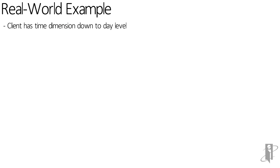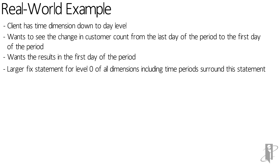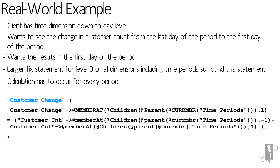Let's look at a real-world example. I have a client that has a time dimension down to a day level. They wanted to see the change in customer count from the last day of the period to the first day of the period, with the results placed in the first day of that period. This whole thing has a larger FIX statement around it fixing on level zero of all dimensions, including the time dimension, and the calculation had to occur for every single period. I created a member called Customer Change and I'm storing the data there, using the Member At function in a cross-dimensional operator to put it into the first day of the period. It equals the customer count from the last day of the period — using minus one — minus the customer count from the first day of the period using Member At. So I'm getting last day minus first day, stored in the first day of the period.